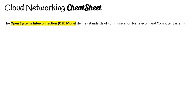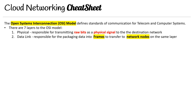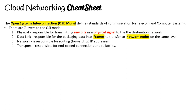The Open Systems Interconnection defined standards of communication for telecom and computer systems. There are seven layers in the OSI model. We have the physical layer, responsible for transmitting raw bits as a byte signal to the destination network. You have data link, responsible for packaging data into frames to transfer to network nodes in the same layer. Then the network layer, responsible for routing or forwarding IP addresses. And the transport layer, responsible for end-to-end connections and reliability.